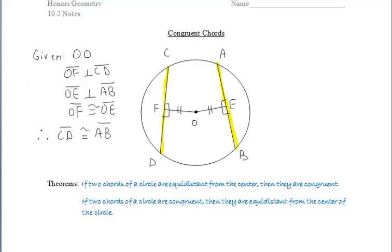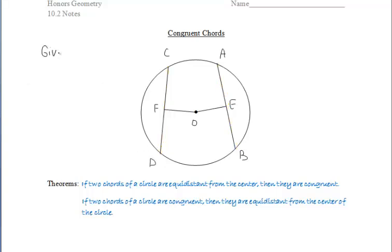And that is what happens with the first one. So if we have two chords of a circle that are equidistant from the center, then the large chords are congruent.